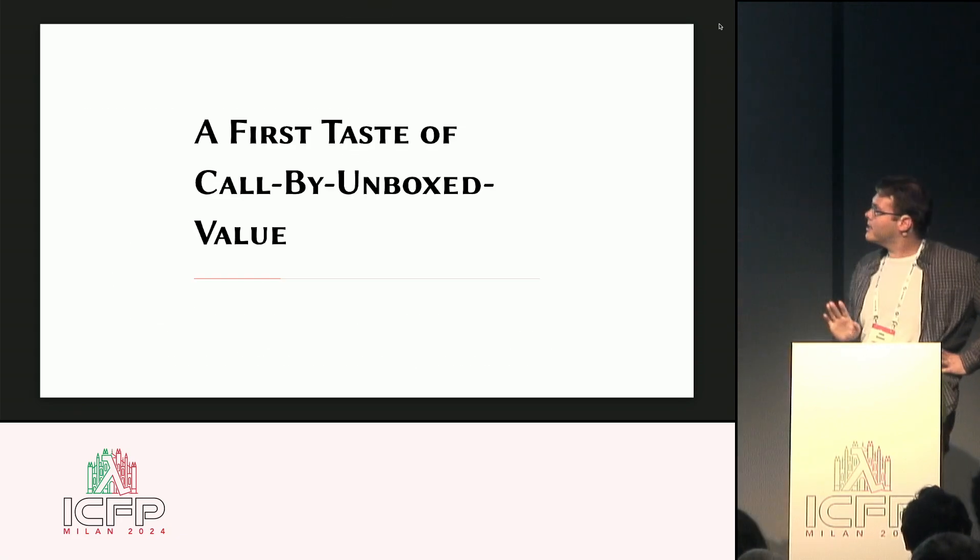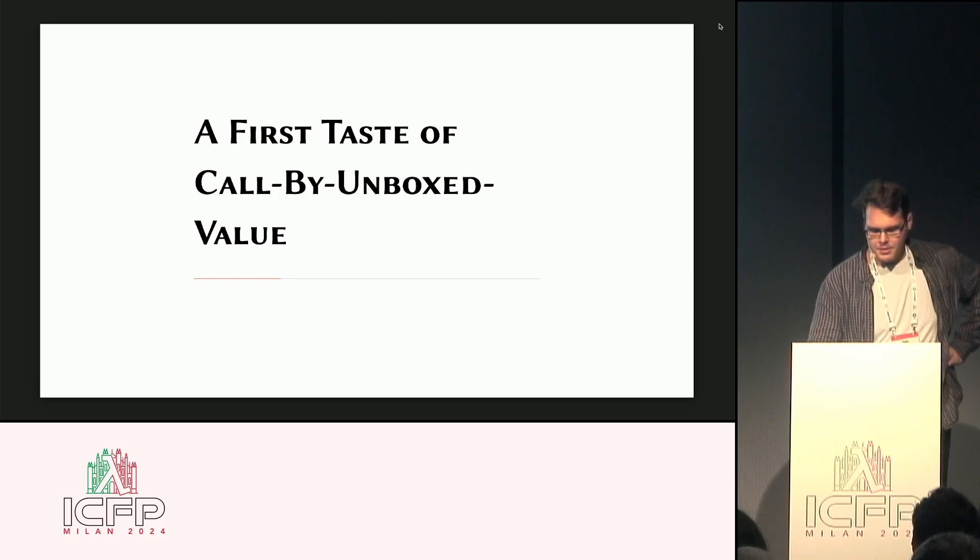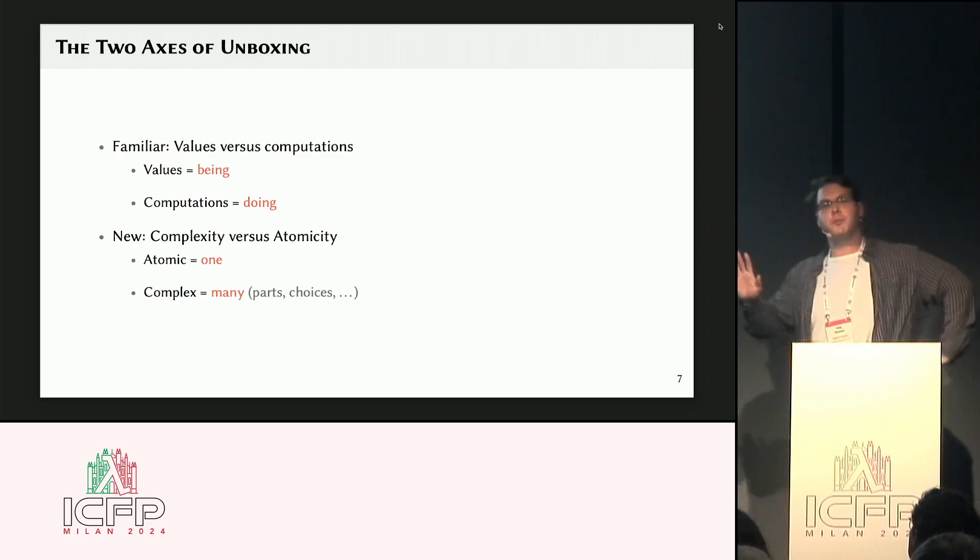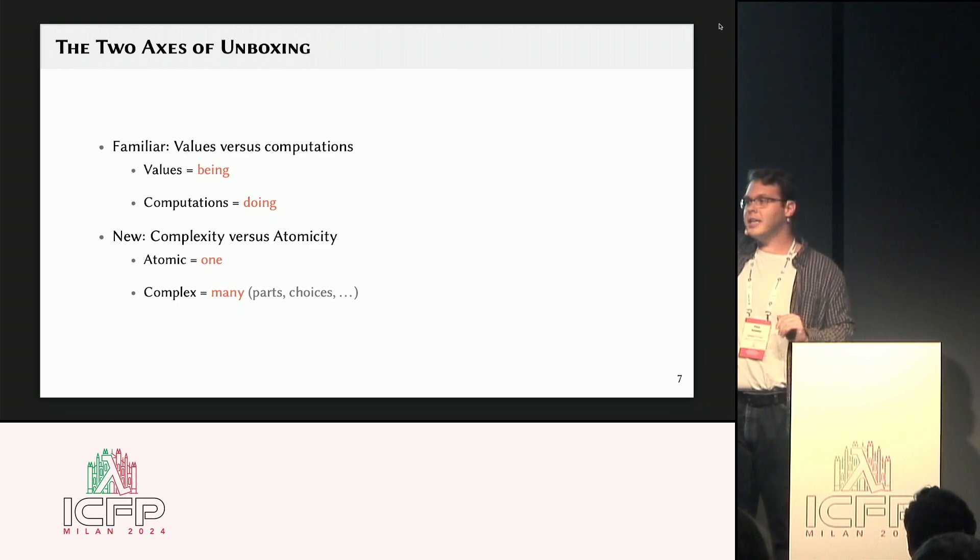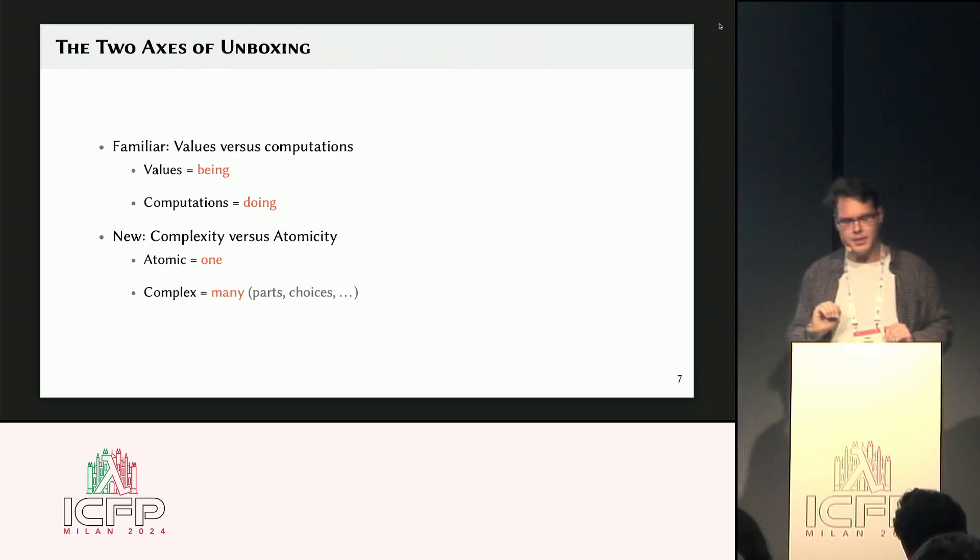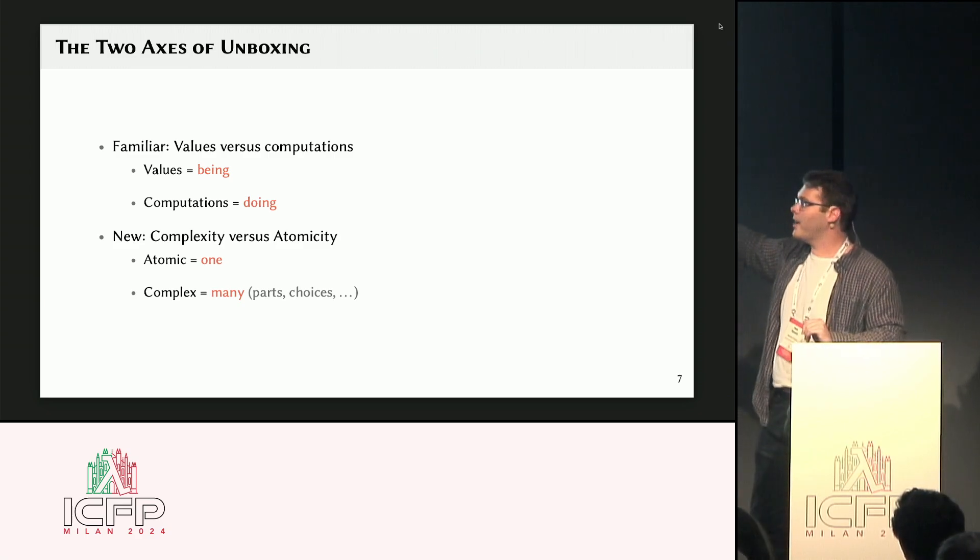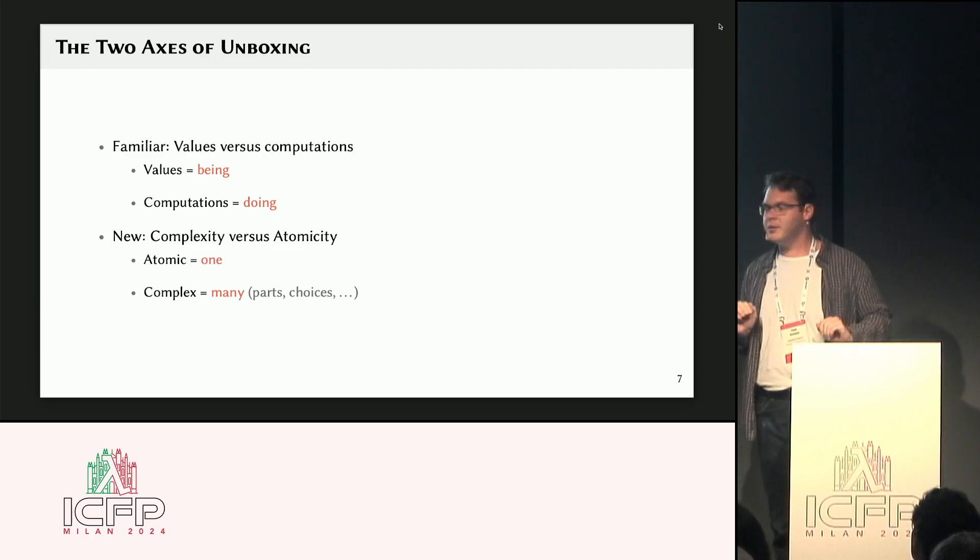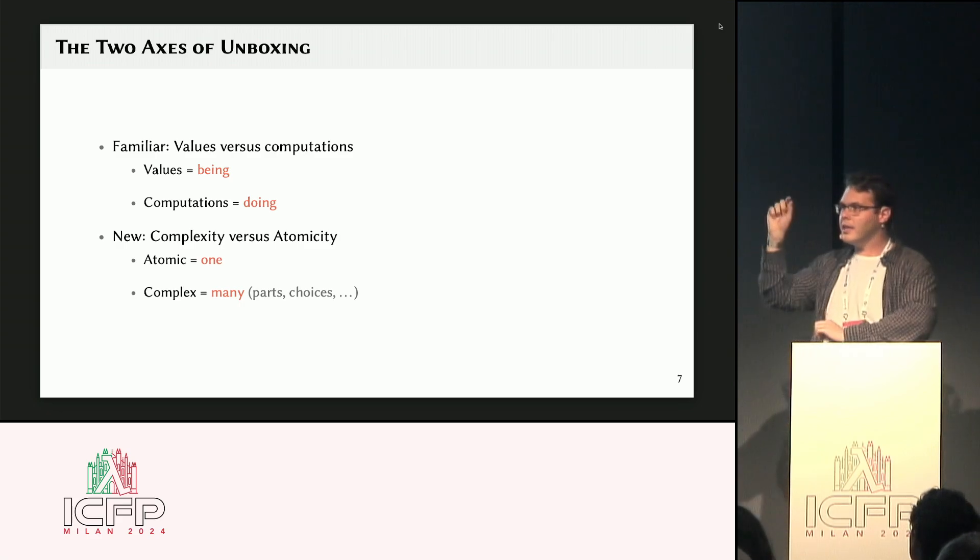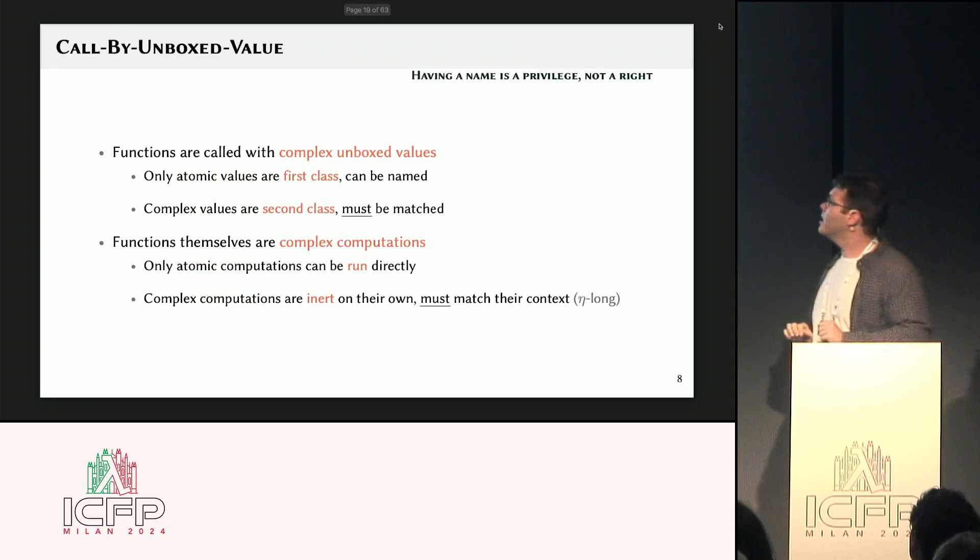So I want to start now taking the segue to talk about what call by unboxed value looks like through something we, well, many of us will already know, which is call by push value, right? So the suspicious similarity in name is because they're very closely related. If you know about call by push value, you're probably very familiar with the difference between doing and being. Those are types of values versus types of computations. And called by unboxed value adds one other axis of distinction, which is some things are atomic. There's just one of them. And some things are complex. There's many and maybe multiple different senses. And these are really orthogonal. You can mix and match these two however you want. And this has an impact to sort of the design of this little tiny core language.